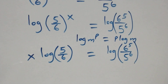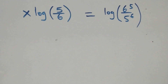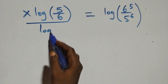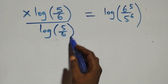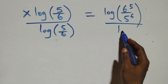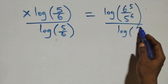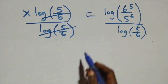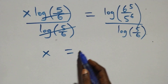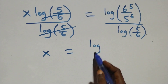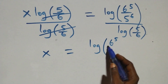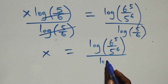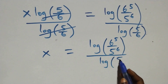From here we divide both sides by log(5 over 6). We divide this side by log(5 over 6) and also divide the other side by log(5 over 6), so log(5 over 6) cancels out and we are left with x, which equals log of (6 raised to power 5 over 5 raised to power 6) divided by log(5 over 6).